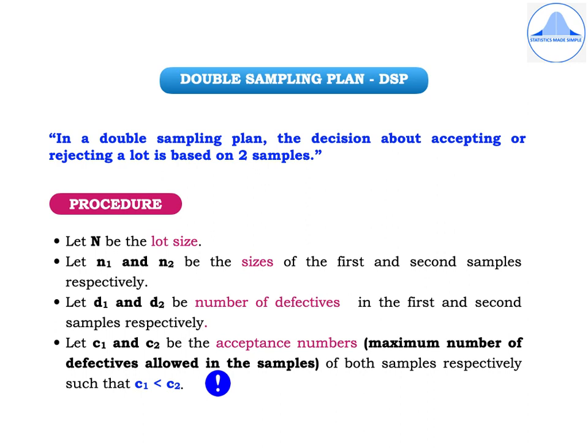Next we have the double sampling plan, or DSP. In a double sampling plan, the decision about accepting or rejecting a lot is based on two samples. The notations used are: N for the lot size; n1 and n2 for the sizes of the first and second samples respectively; d1 and d2 for the number of defectives in the first and second samples respectively; and c1 and c2 as the acceptance numbers — the maximum number of defectives allowed — such that c1 is less than c2.